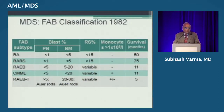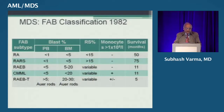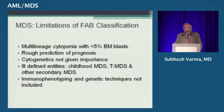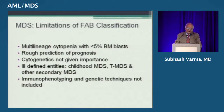The FAB classification divided myelodysplasia into five groups based upon the number of blasts in the peripheral blood and the bone marrow, the number of ring sideroblasts, or monocytosis. These were: refractory anemia, refractory anemia with ring sideroblasts, refractory anemia with excess blasts, chronic myelomonocytic leukemia, and refractory anemia with blasts in transformation. Limitations included that it gave no significance to multilineage cytopenias with less than 5% blasts, prognosis prediction was rough, cytogenetics was not considered, and entities like childhood MDS, secondary, and therapy-related myelodysplasia were not addressed.